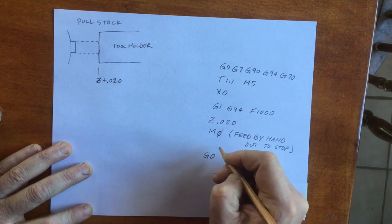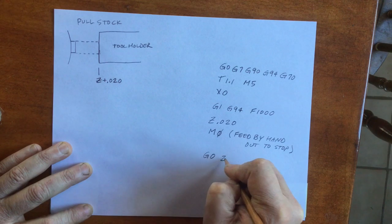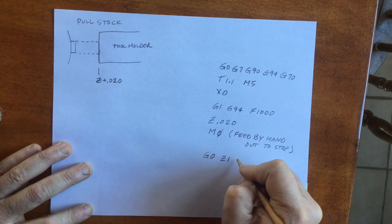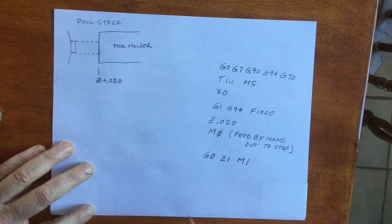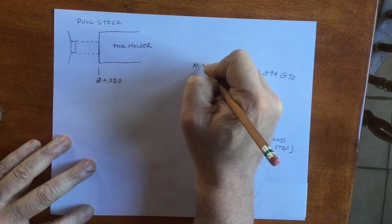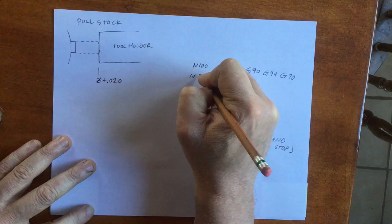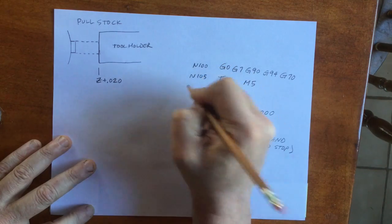The only thing left is to get out of the way, so we're going back to rapid and moving the Z axis out to 1 inch in front of the part. We're going to put in the optional stop. Now we need line numbers starting from 100 and skipping by 5s.